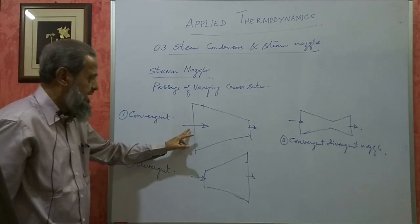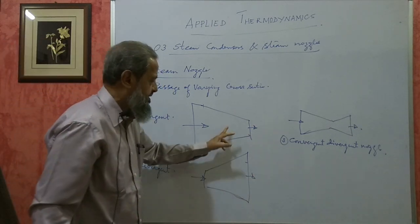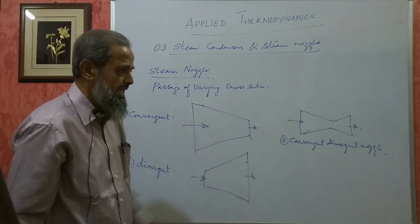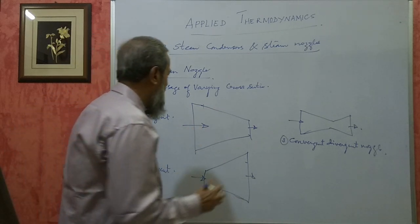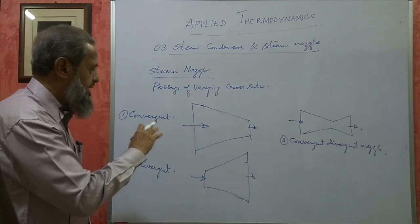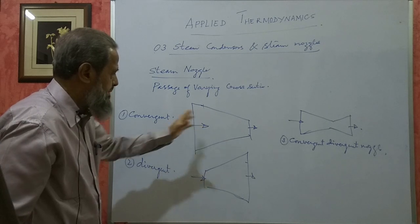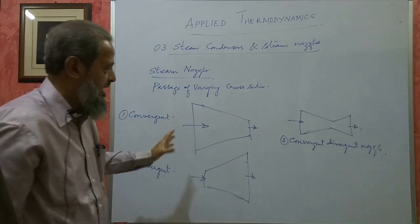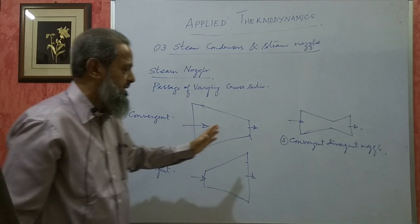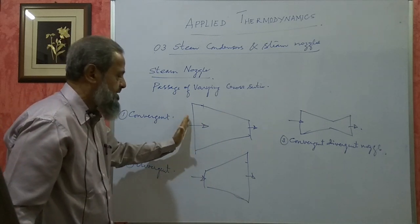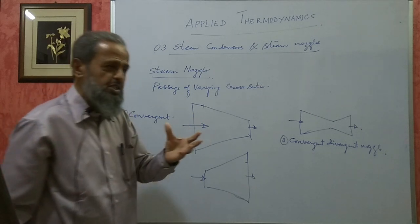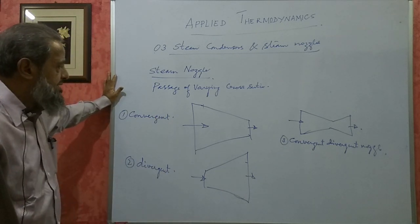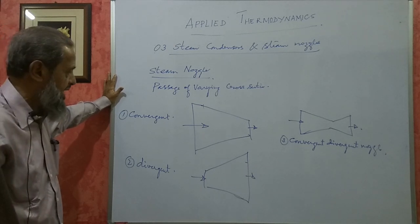When steam loses pressure, its enthalpy drops - that means it loses heat. The heat at entrance will be greater than the heat at exit. When it loses pressure and heat, it gains velocity. A nozzle is a device where the heat energy of the steam is converted into kinetic energy or velocity energy. The steam enters with very negligible velocity and comes out with greater velocity.